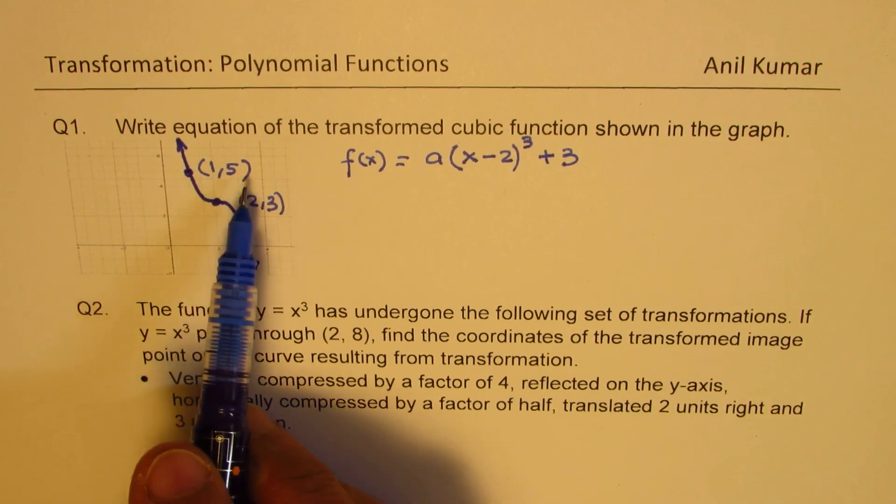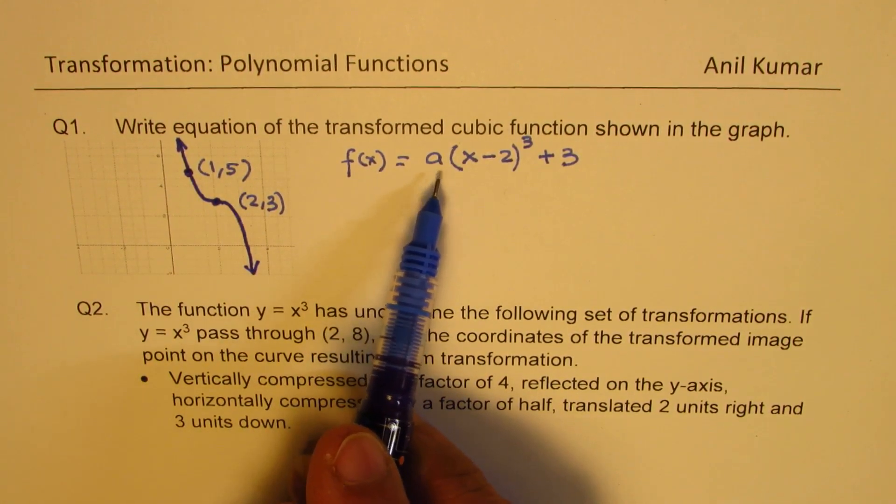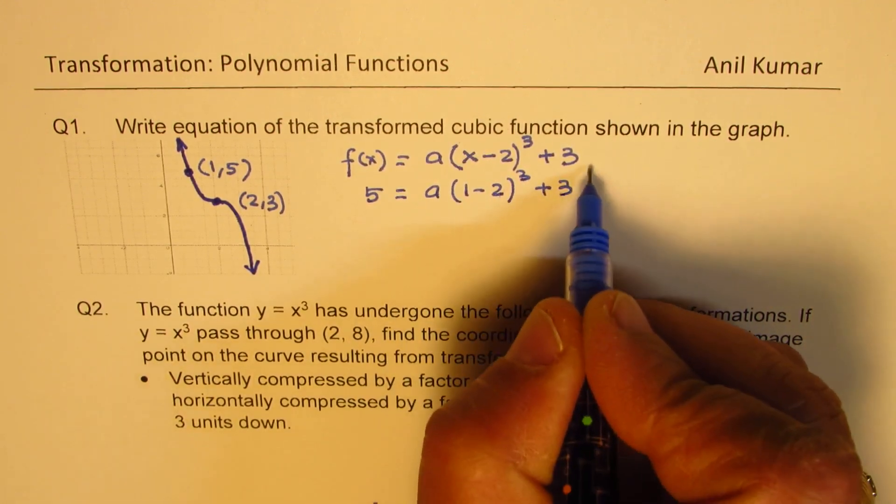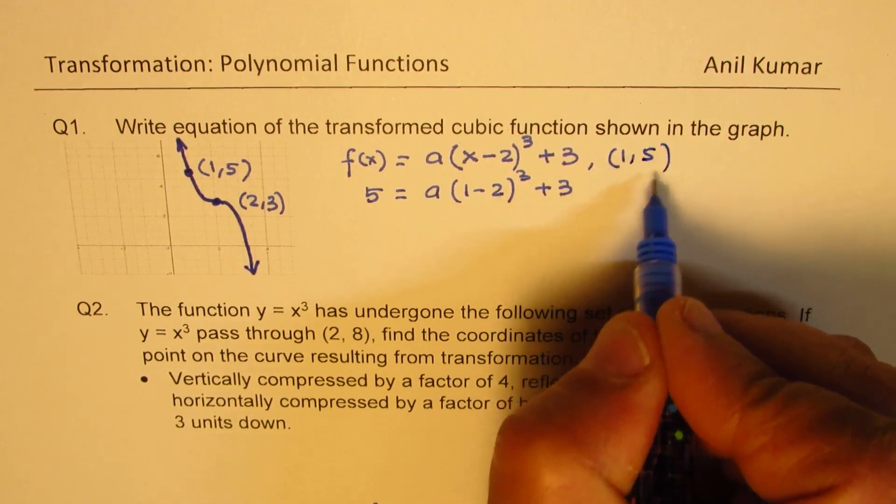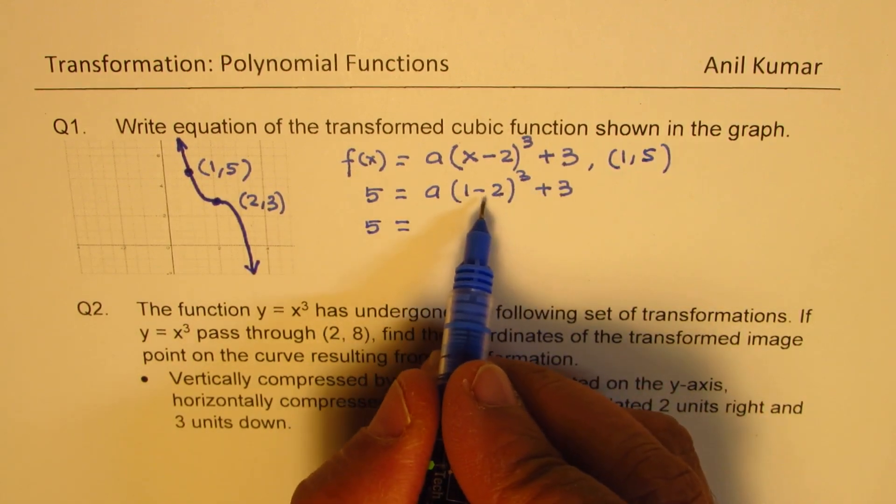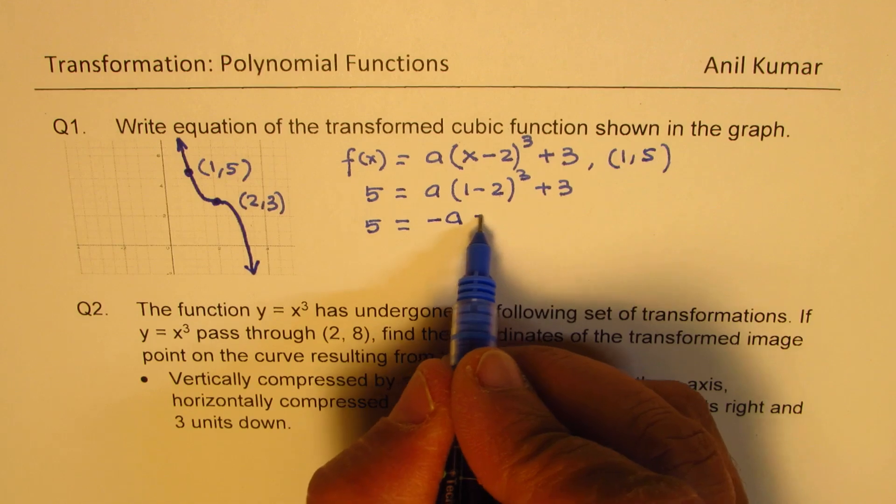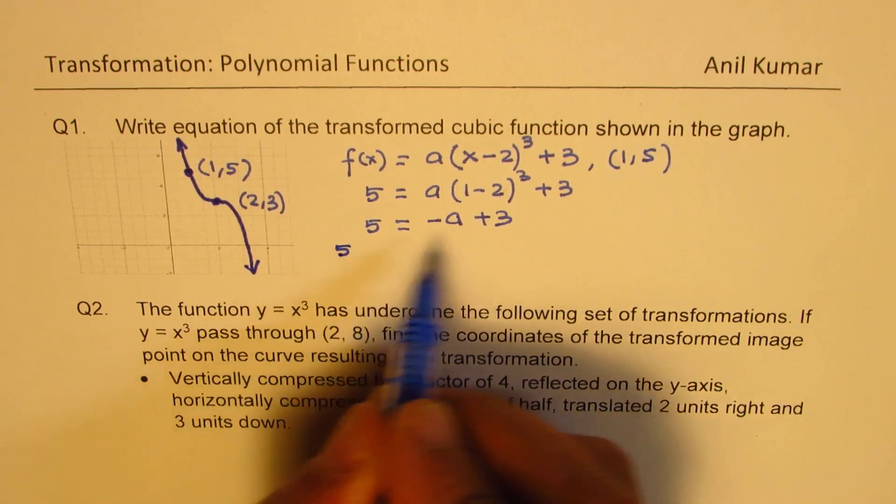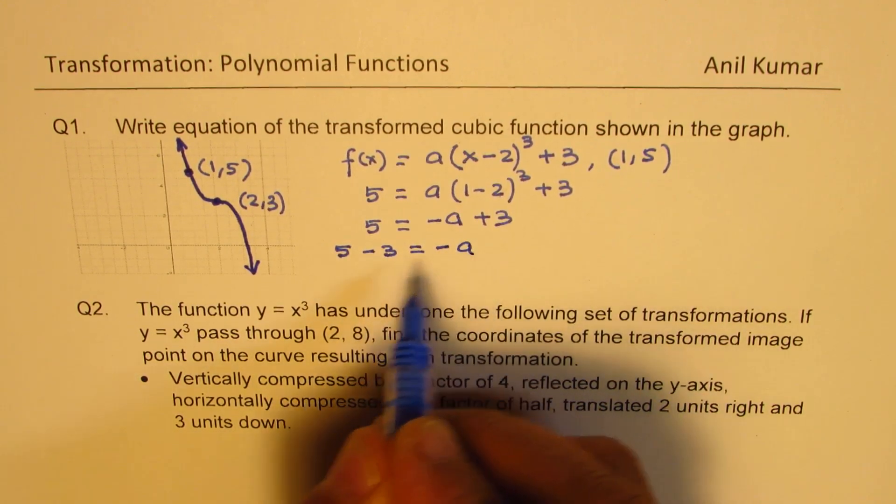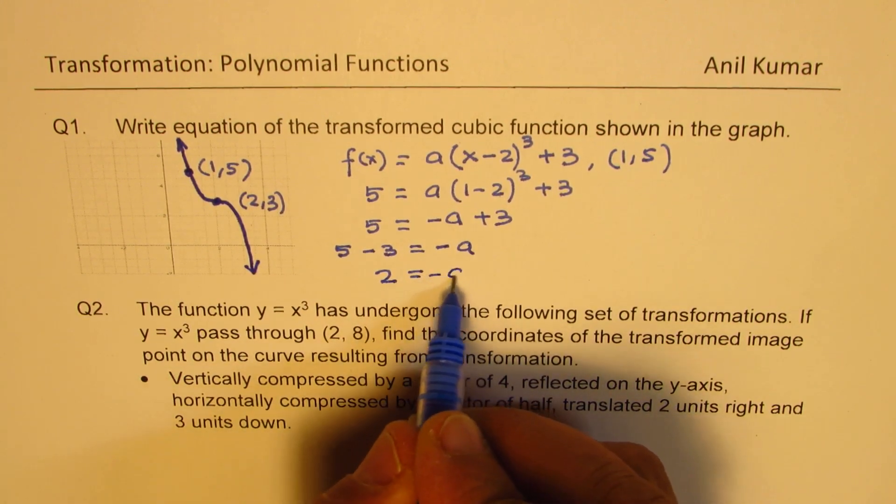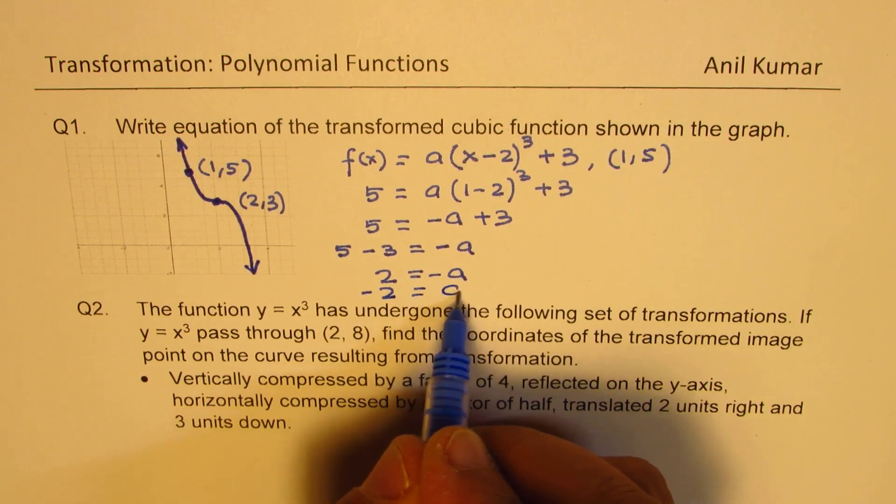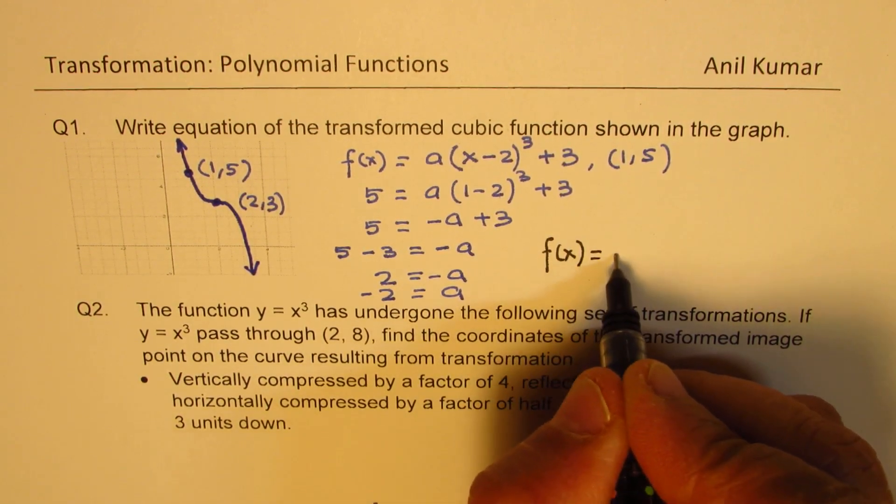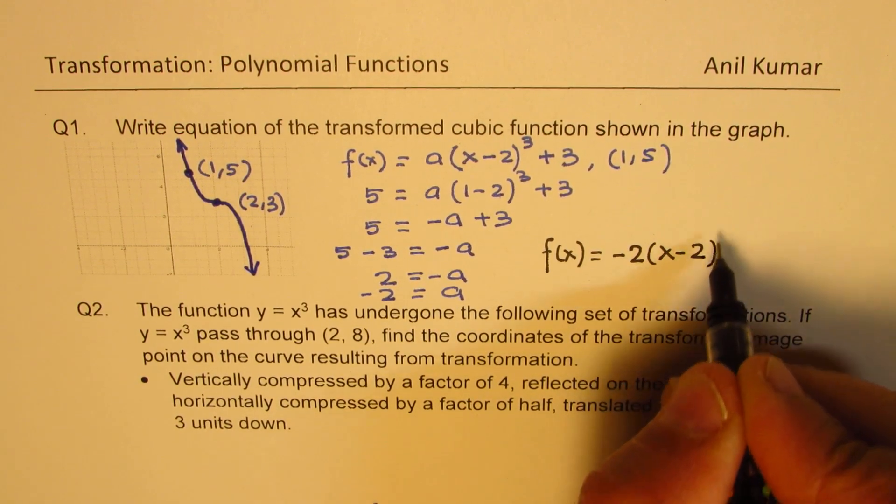Now to find the value of a, we can use the point 1, 5. Substituting 1 and 5, we should get a. So 5 equals to a times (1 minus 2) whole cube, plus 3. So we substituted in this the point 1, 5 to find the value of a. So which gives us 5 equals to minus a plus 3. Bringing this 3 to this side, we get 5 minus 3, minus 2 is equal to minus a, or we can write down 2 equals to minus a, and that gives you minus 2 as the value of a. Now we can write down the function itself. The function f(x) is equal to minus 2(x minus 2) whole cube, plus 3.